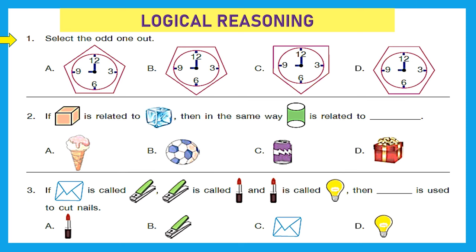Let's see all the figures A, B, C, D. They all have a circular clock inside, and all the clocks are showing nine o'clock — so that is the same. Now let's see the outer figure: A, B, and C each have five sides, that is a pentagon, whereas D has six sides, that is a hexagon. So D is the odd one out.